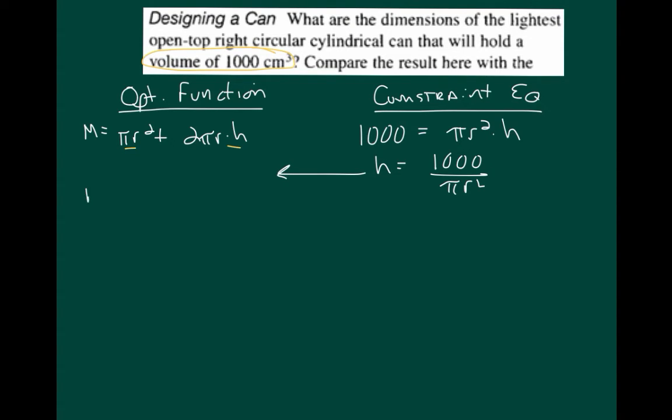So we now have a new function, m(r), which equals pi r squared, plus 2 pi r. And then here's my substituted value for h, 1,000 over pi r squared. Okay. Now let's simplify that and get it ready for optimization. When I do that, one of the pi's in the numerator and the pi in the denominator are going to cancel. Same with one of the r's. So I'm left with 2,000 over r, or 2,000 r to the negative 1.